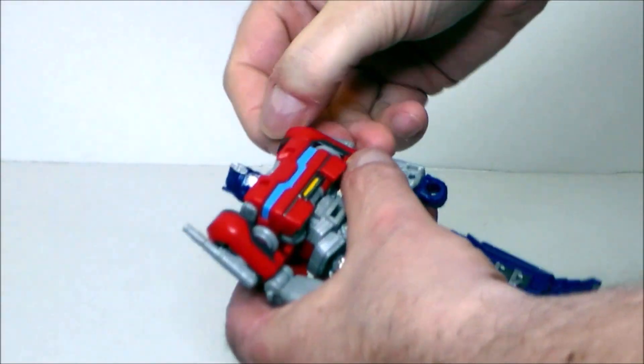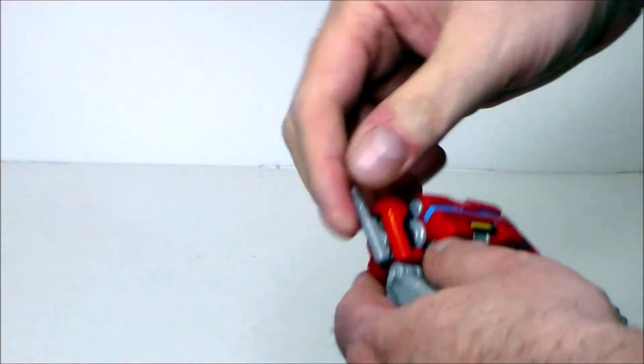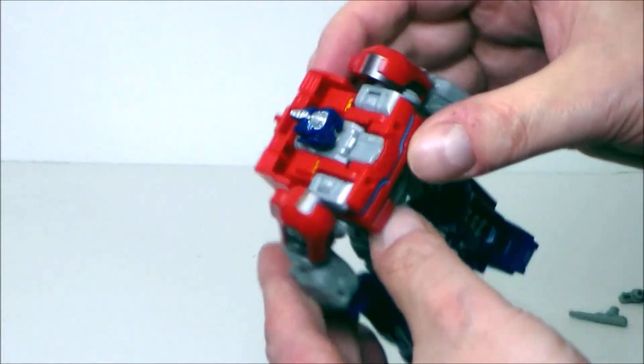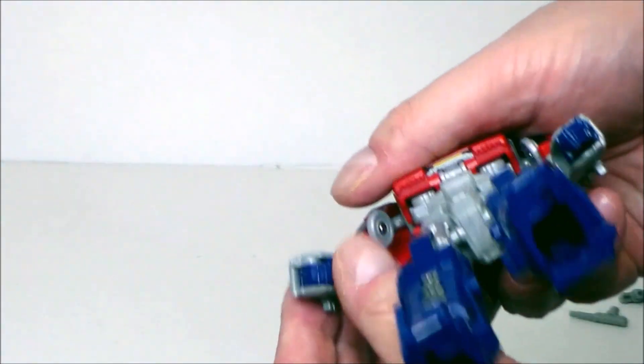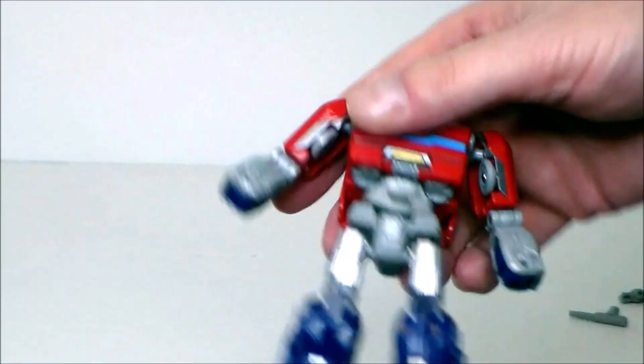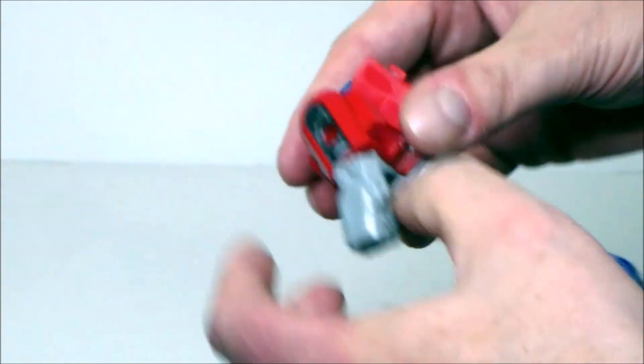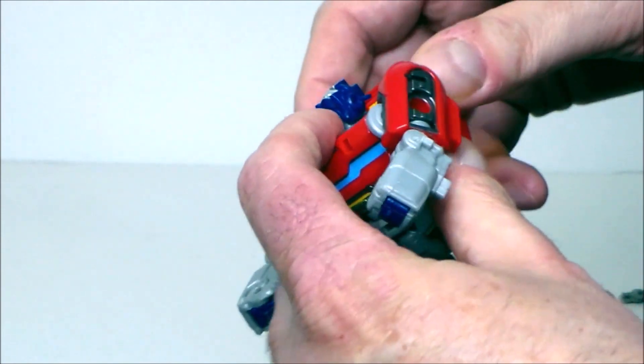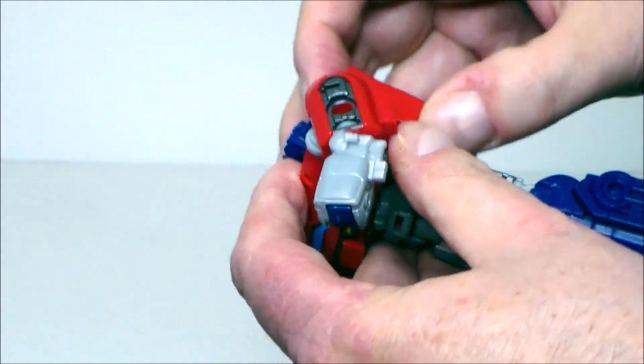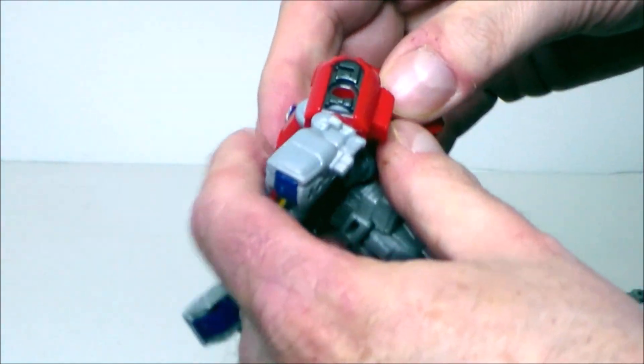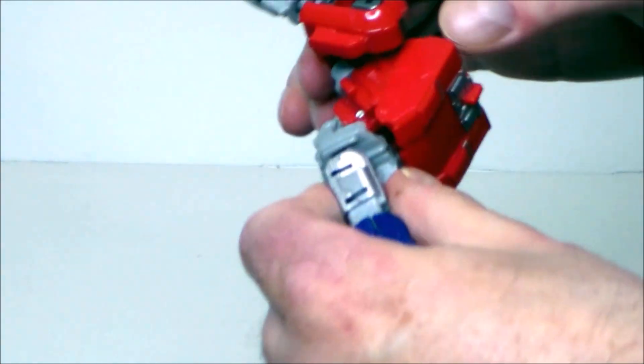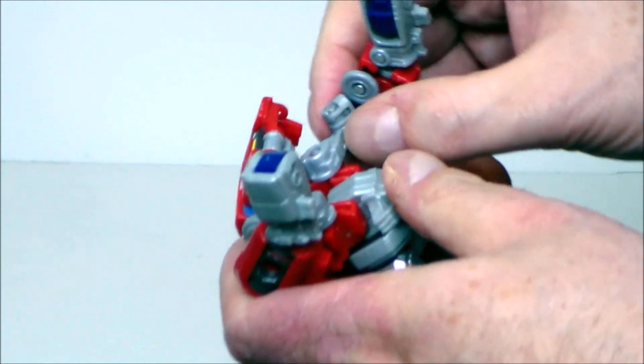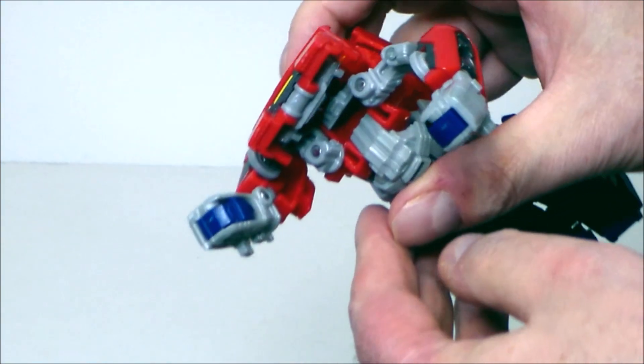Now, transformation on this figure is kind of a pain in the butt up around the upper parts. So first thing we're going to do is take off these stacks. Now, you don't have to, but it's a lot easier. They're just going to fall off as you try to transform this. Rotate the head back like this. Then we're going to put the fists into the forearms like this. So we're going to get those kind of out of the way. Then we're going to lift the backpack back just a little bit. So we're going to unhook it. And this thing does not move very well. I'm going to warn you right now. It's kind of a pain in the butt.